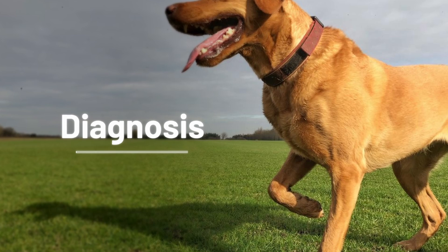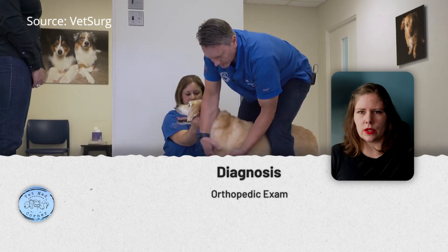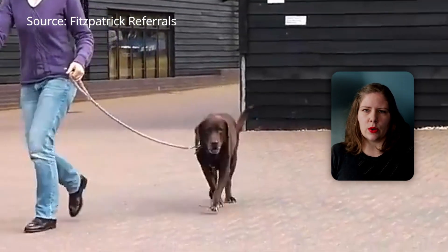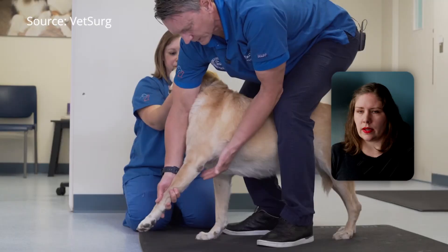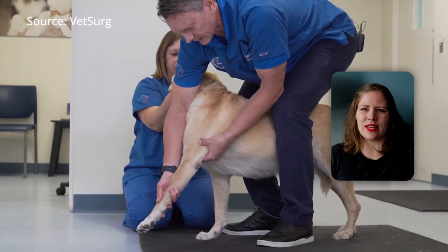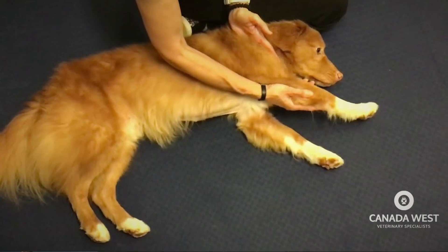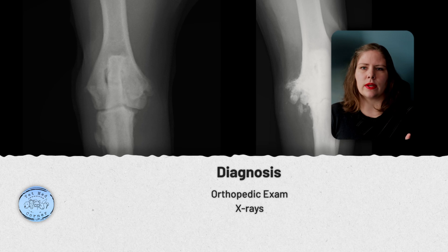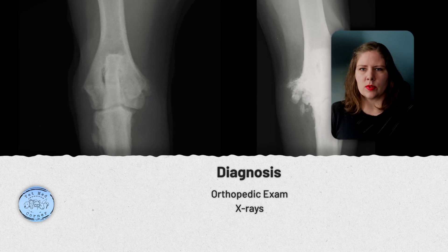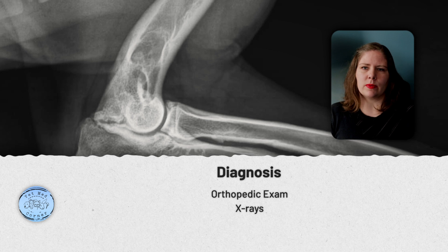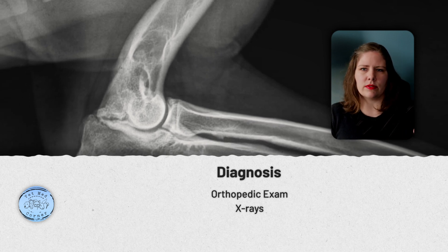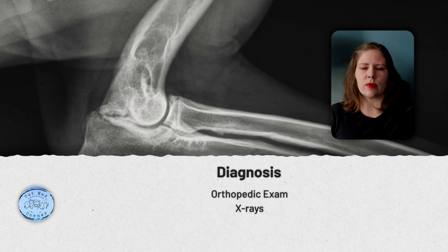To diagnose elbow dysplasia, we start with an orthopedic exam including analyzing your animal's gait. If you can bring video of when you notice the issue, that can be very helpful to a veterinarian — I always appreciate it when people bring receipts. Usually the dog will have more pain at the end of the elbow range of motion, whether that's fully bending or fully extending it. We will then sedate your pet to get x-rays of where we've localized the pain. Sometimes we will take x-rays of both the shoulders and the elbows because it can be challenging to differentiate where the exact issue is from an orthopedic exam alone.